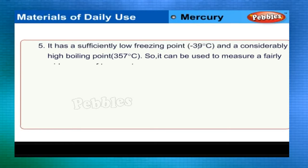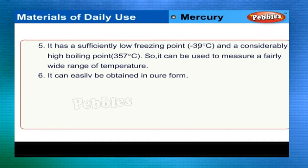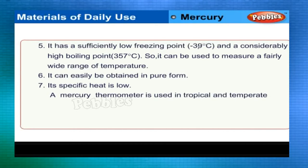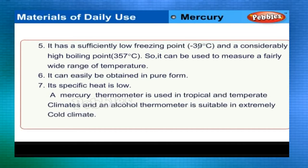Mercury has a sufficiently low freezing point (−39°C) and a high boiling point (357°C), allowing it to measure a wide range of temperatures. It can easily be obtained in pure form, and its specific heat is low. A mercury thermometer is used in tropical and temperate climates; an alcohol thermometer is suitable for extremely cold climates.